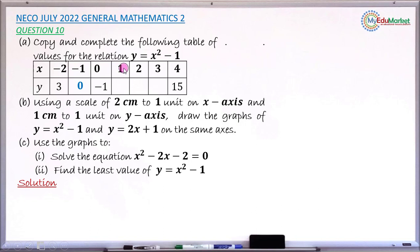Next, replace x with 2: 2 squared is 4, and 4 minus 1 gives y equals 3. Then when x is 3: 3 squared is 9, and 9 minus 1 gives y equals 8. This completes the table for question a.